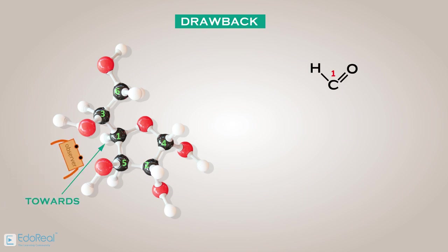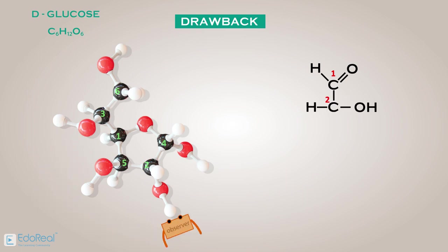For example, let us consider a complex molecule, D-glucose, which is represented as shown. If we rotate the molecule so that horizontal bonds with C2 are slanted towards the observer, then the horizontal bonds with C3 are slanted away from the observer. So, after drawing the bonds with C2, the molecule should be rotated 180 degrees about its vertical axis before drawing the bonds with C3.